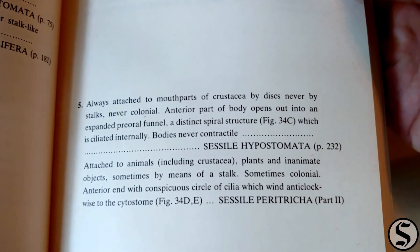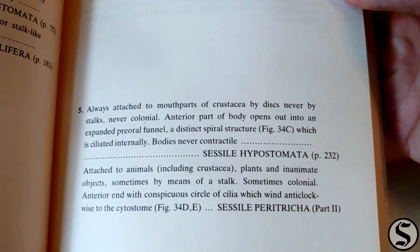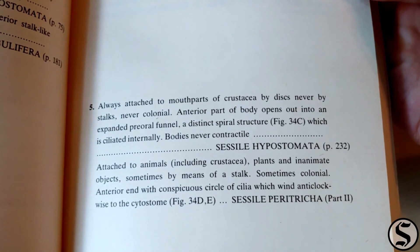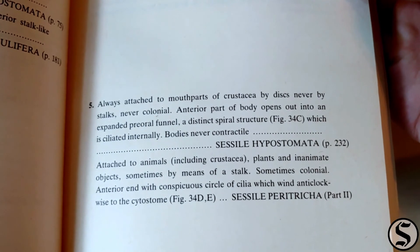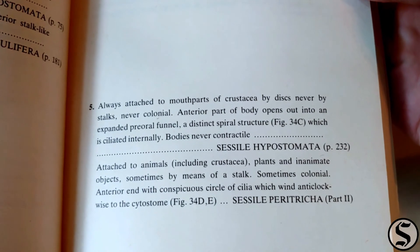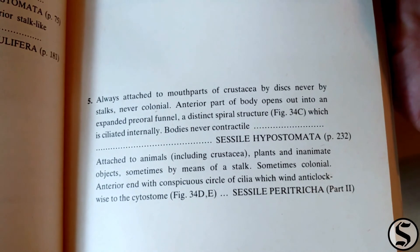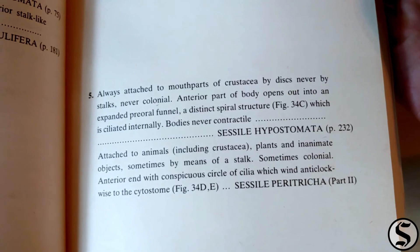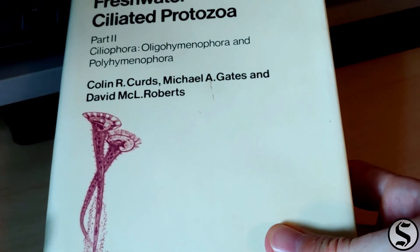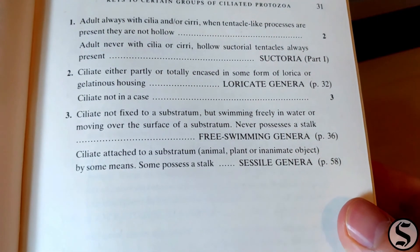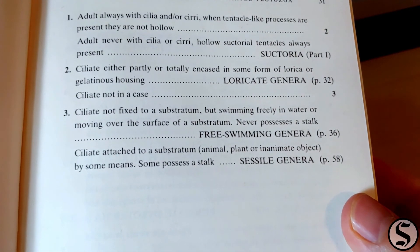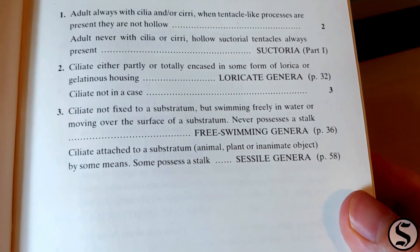Step number five: always attached to the mouth parts of crustacea — nope. The sub-step: attached to animals, plants, and inanimate objects, sometimes by means of a stalk — that is definitely us. So we've got a Cecil paratrick, and that sends us on to part two. Part two is a whole other book. Part two asks the same questions at the beginning as part one, and we still land at the Cecil genera on page 58.